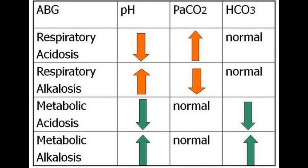With respiratory acidosis: pH is below normal, carbon dioxide levels are high, and bicarbonate is normal. With respiratory alkalosis: pH is higher than normal, carbon dioxide levels are low, and bicarbonate is normal. For metabolic conditions, carbon dioxide will be normal but bicarbonate will change. Metabolic acidosis: pH lower than normal, bicarbonate low. Metabolic alkalosis: pH higher than normal, bicarbonate high.